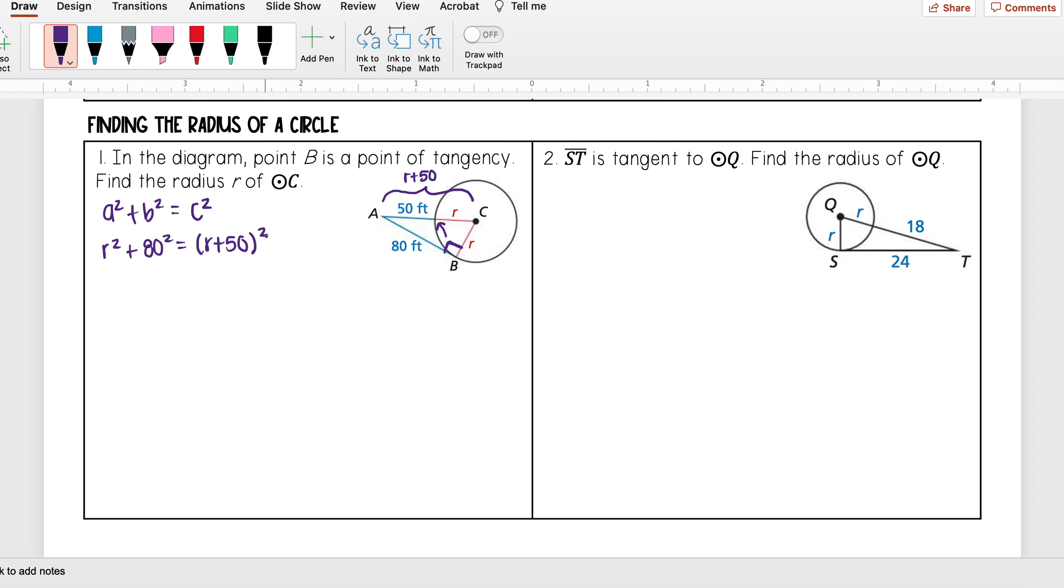And then I'm squaring that, and then now I want to solve this for R. Well, when I do 80 squared, that's 80 times 80, and I get 6400.